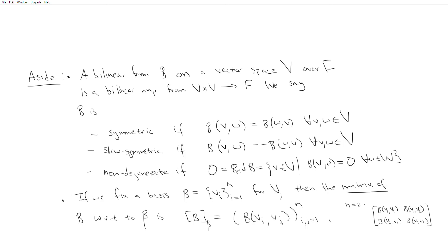In the last video we looked at the general linear algebra and the special linear algebra. In particular, the special linear algebra corresponded to a family of Lie algebras that we label type A sub L. In this video we're going to look at type B sub L, C sub L, and D sub L, and these four families are really important in our study of semi-simple Lie algebras.